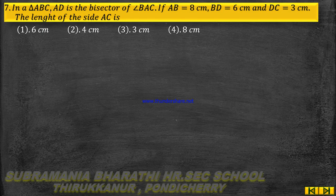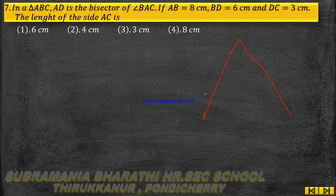In triangle ABC, AD is the bisector of angle BAC — it is the angle bisector of BAC.